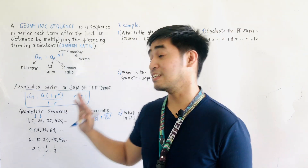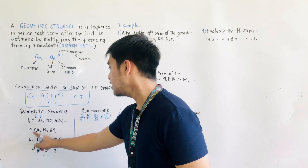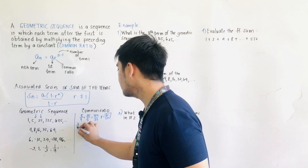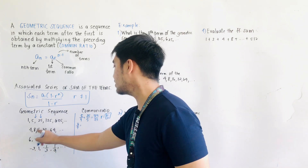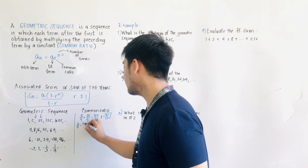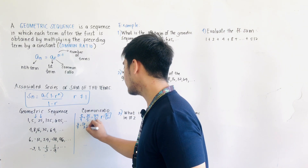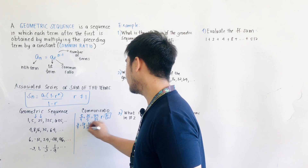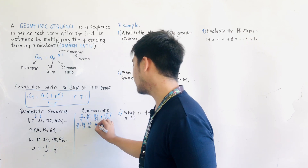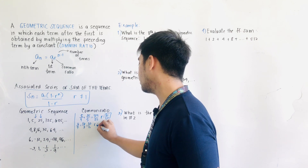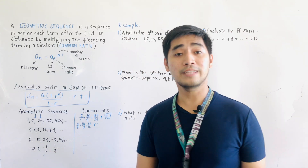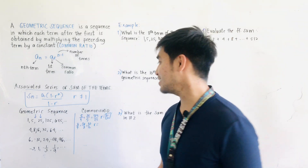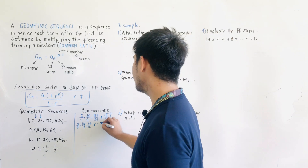For the sequence 4, 8, 16, 32, 64: 8 divided by 4, 16 divided by 8, 32 divided by 16, and 64 divided by 32 — it all boils down to a common ratio equal to 2.